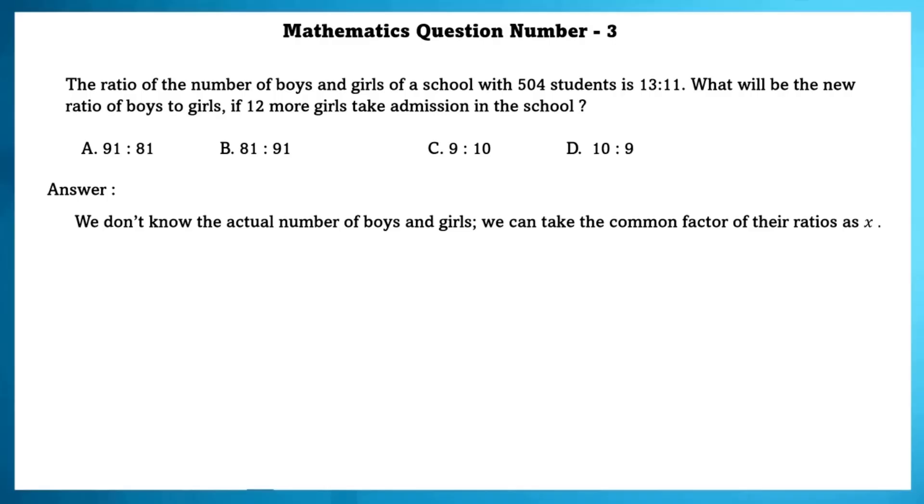We don't know the actual number of boys and girls so we can take the common factor as their ratios as x. Then we get 13x plus 11x which is equal to 504. That can be written as 24x is equal to 504.